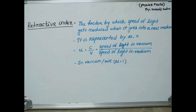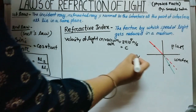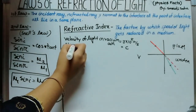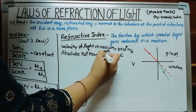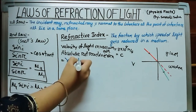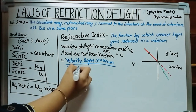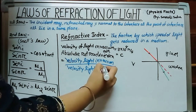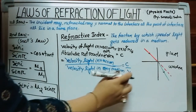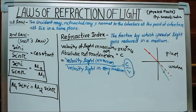Here we compare the velocity of light in any medium to the velocity of light in air medium or vacuum. This is known as absolute refractive index. Refractive index equals the velocity of light in vacuum divided by the velocity of light in any medium, represented as c by v. Here, v is the velocity of light in any medium and c is the velocity of light in vacuum.